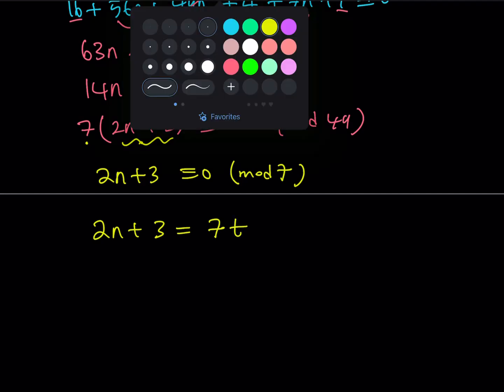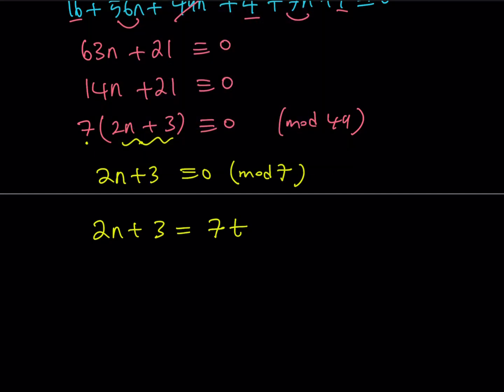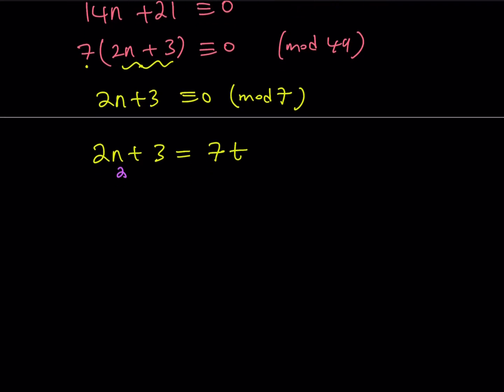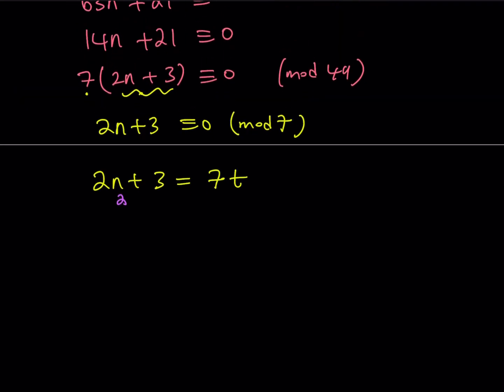So now, at this point, what I can do is I can just, again, guess and check my solution here. Well, it's kind of easy to find because if n is equal to 2, we get 7, which is a multiple of 7. So n equals 2 works. Which means that our original expression, remember, we wrote x as 4 plus 7n. If n is equal to 2, then x is going to equal 4 plus 2 times 7, which is 18. And this means that x is congruent to 18 mod 49.